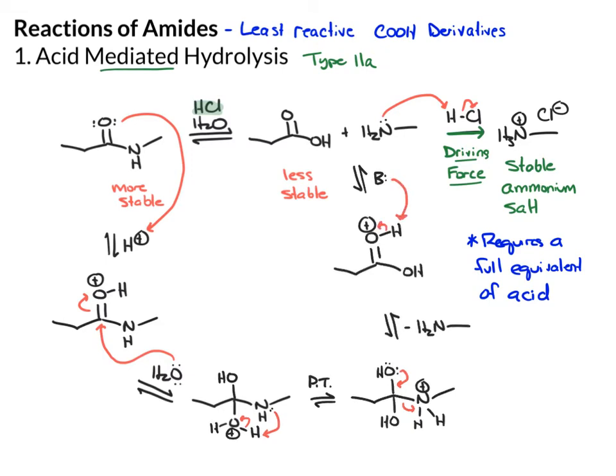From here, you can use a base to take that proton off. You could also use the amine itself — use the lone pair on it to take the proton off — and that will take you to the ammonium salt in that step.